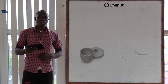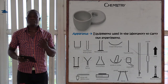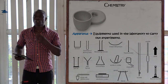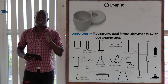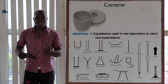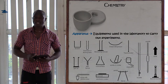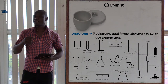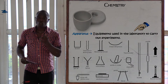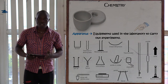A crucible is an apparatus — equipment used in the laboratory to carry out experiments. Note: never abbreviate 'laboratory' as 'lab' in an exam, as you will lose marks. A crucible specifically is an apparatus used to strongly heat solid substances.